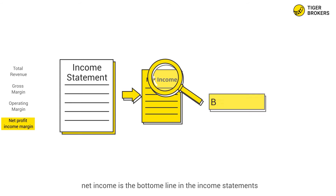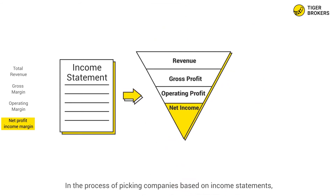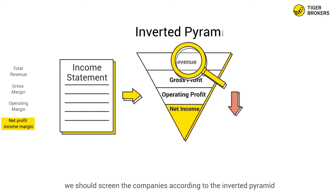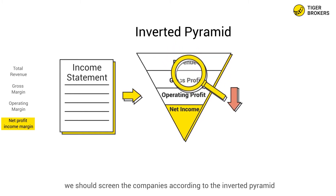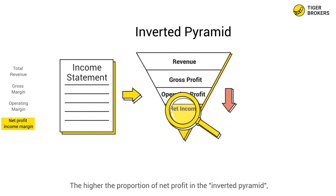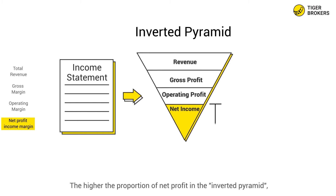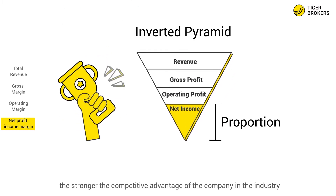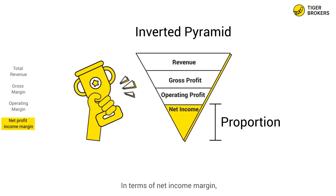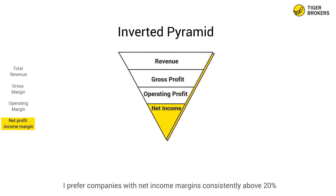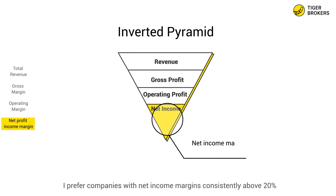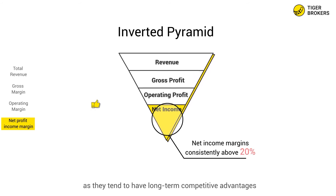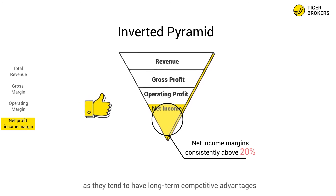Net income is the bottom line in the income statement. In the process of picking companies based on income statements, we should screen companies according to the inverted pyramid — the higher the proportion of net profit in the inverted pyramid, the stronger the competitive advantage of the company. In terms of net income margin, I prefer companies with net income margins consistently above 20 percent, as they tend to have long-term competitive advantages.